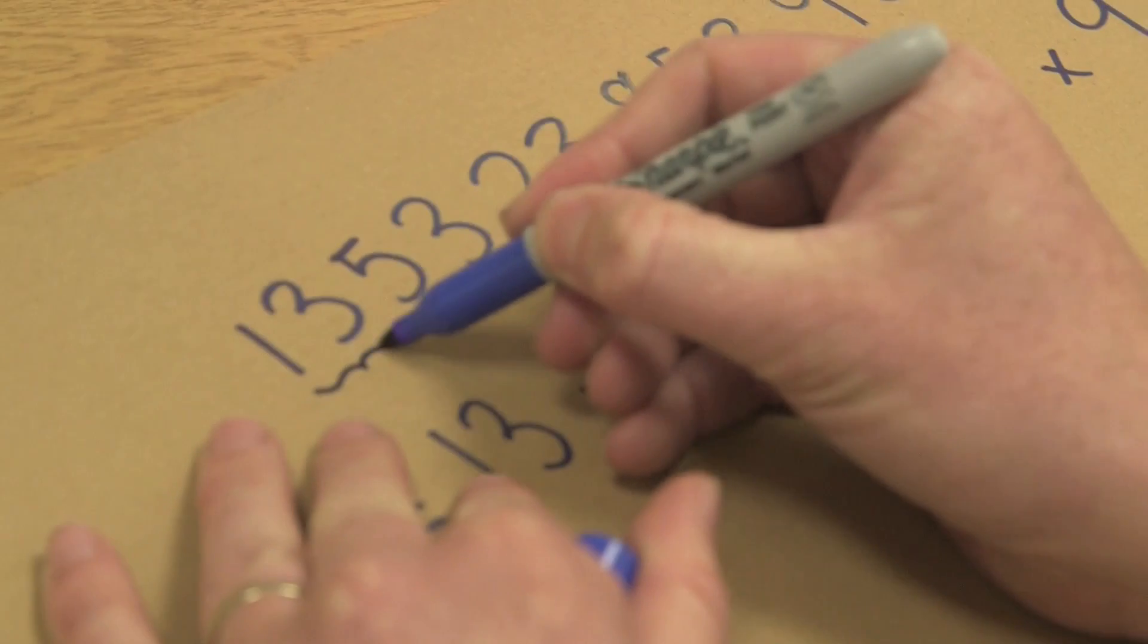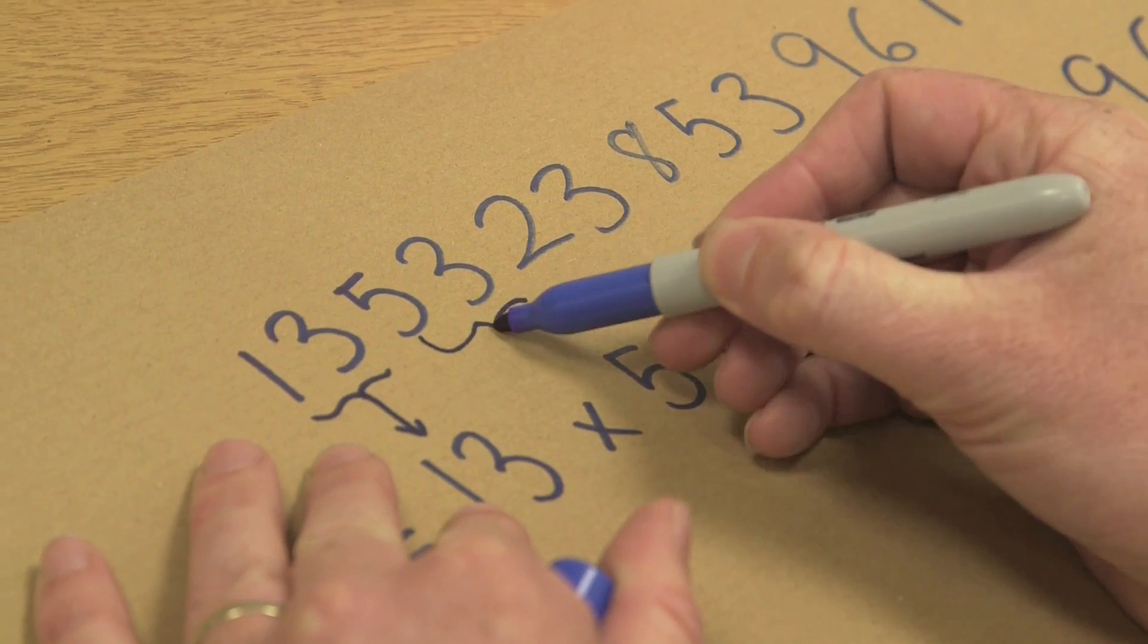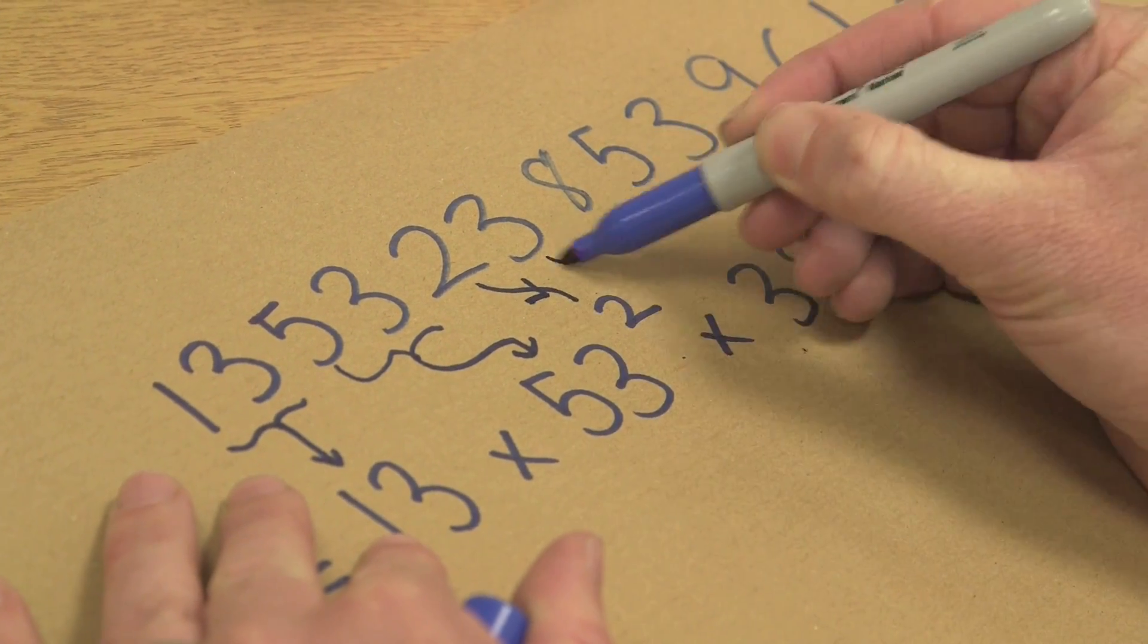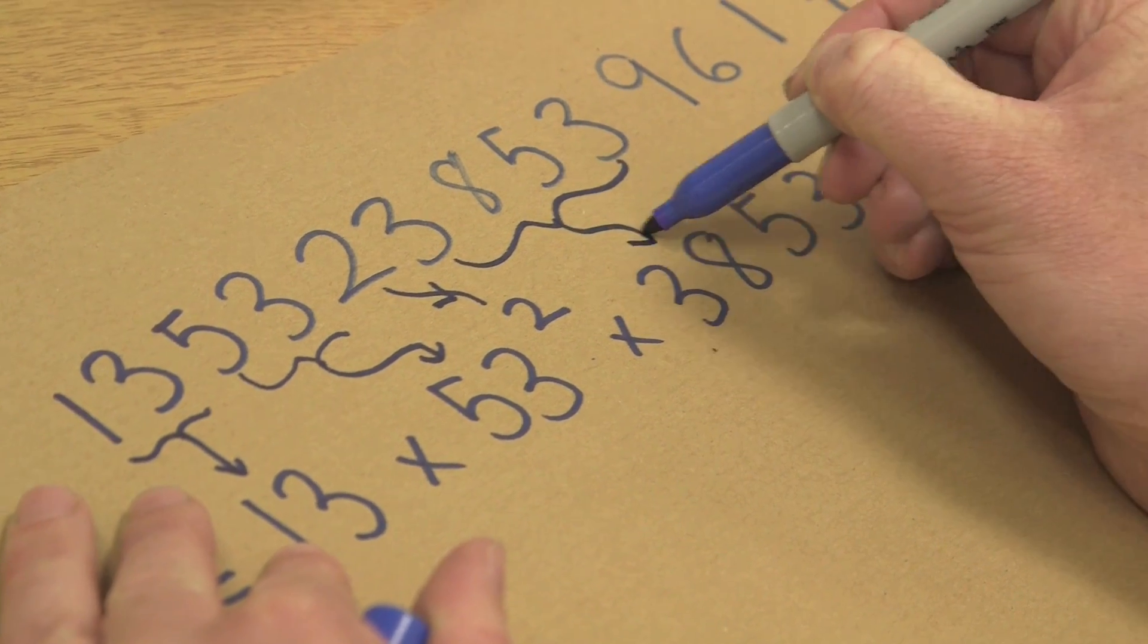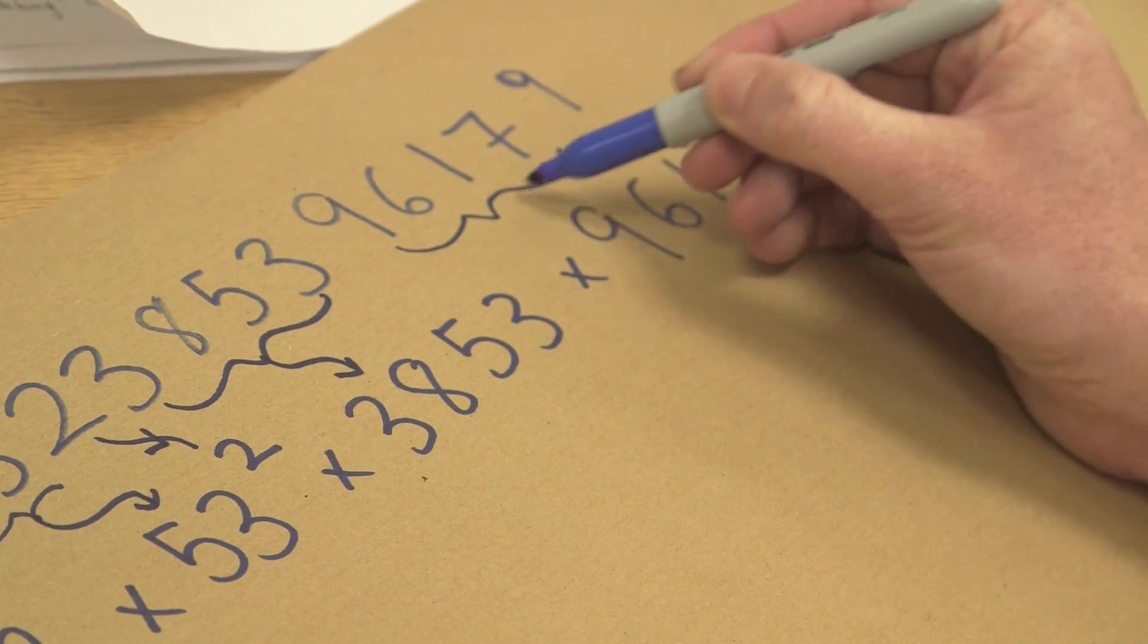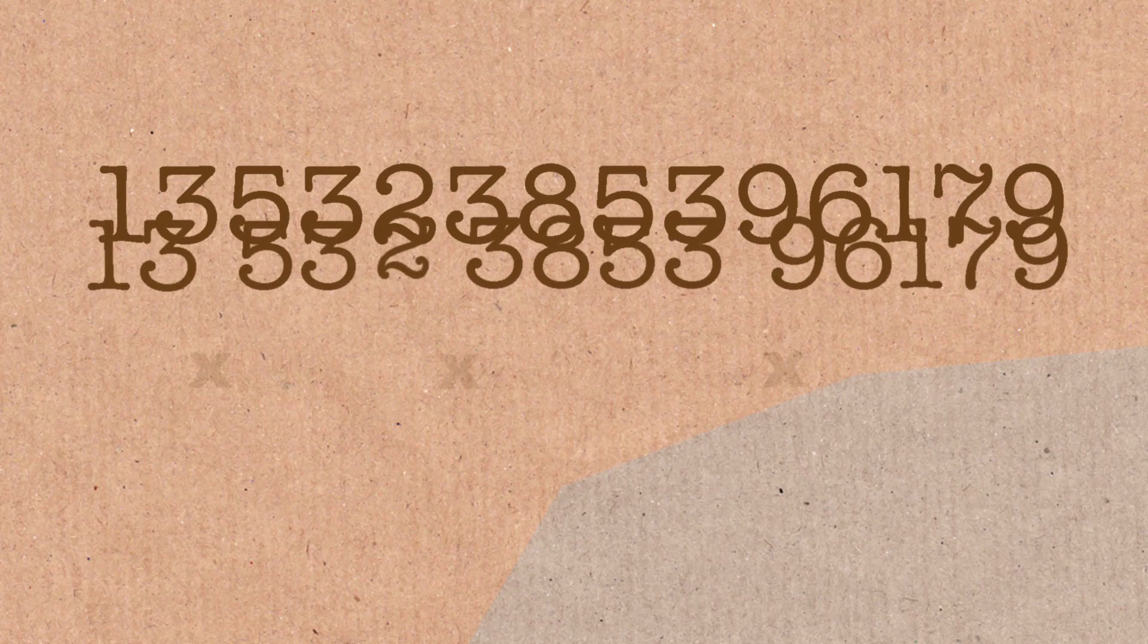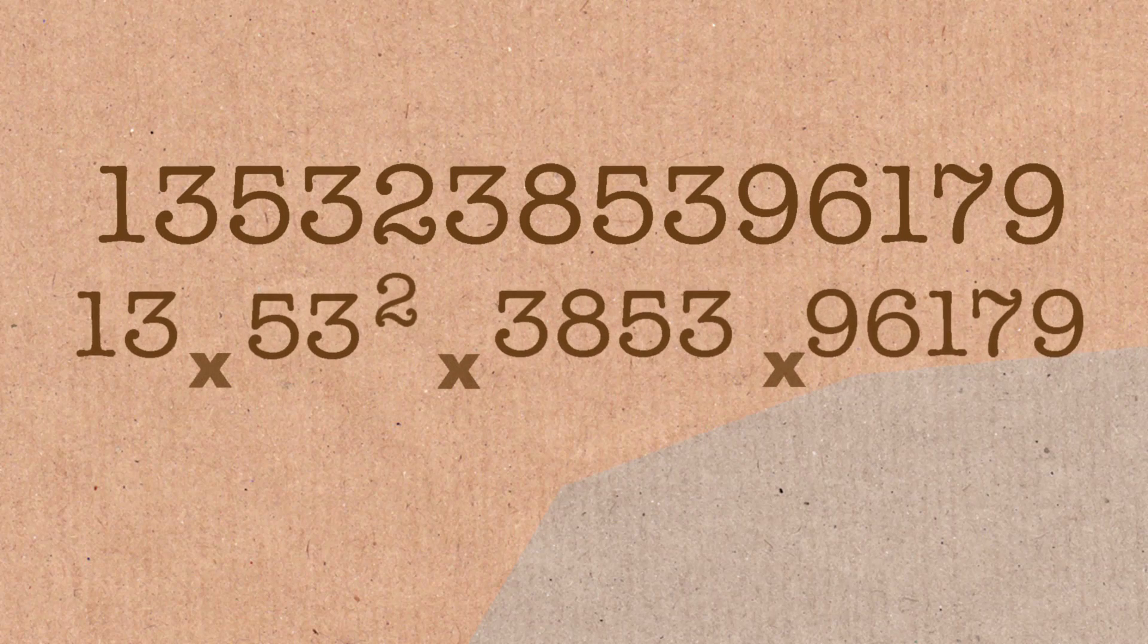There's your 13, right? There's your 53, there's your 2, there's your 3853, and there's your 96179. What have we done here? So I haven't done this. This is a guy called James Davis. He's not a mathematician as far as we understand. We're not really sure who he is.